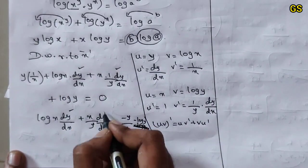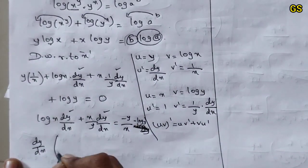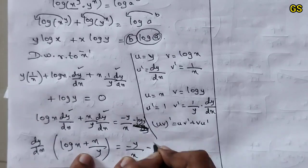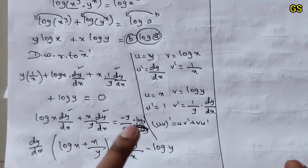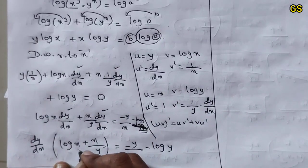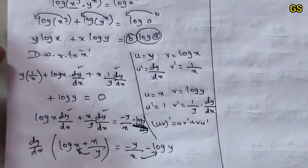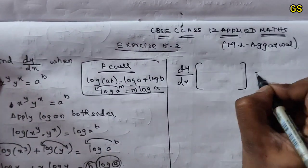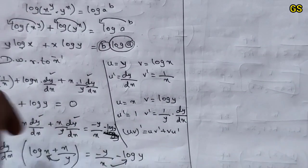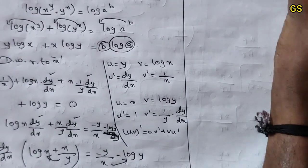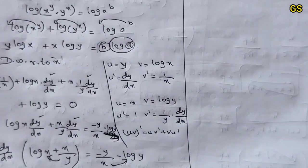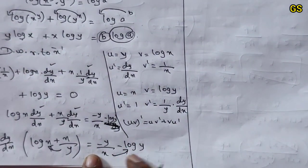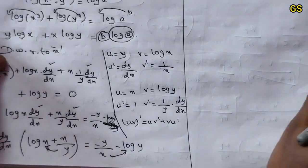Take dy/dx common from the left side: dy/dx times (log x plus x/y) equals minus y/x minus log y. Cross-multiplying, dy/dx equals (minus y/x minus log y) divided by (log x plus x/y), with y cross-multiplied gives x log y by x as common factor.